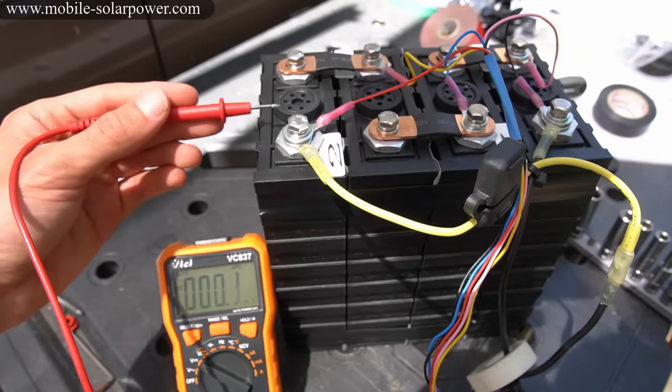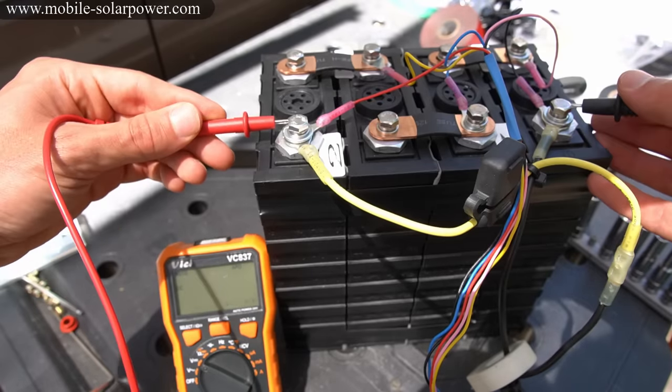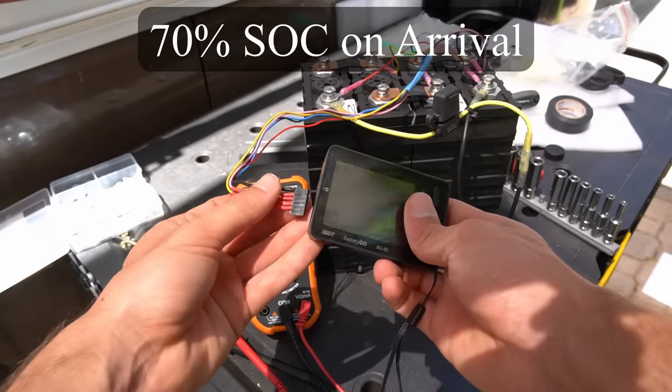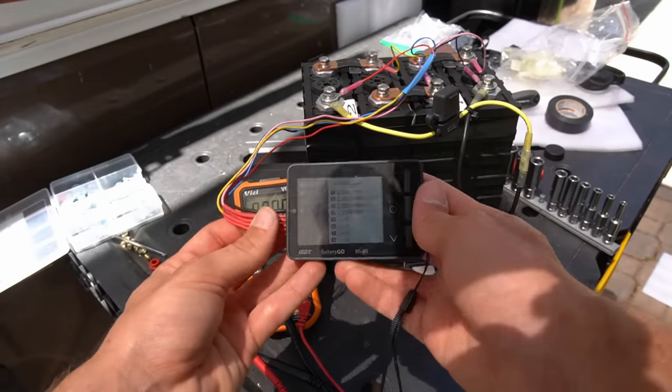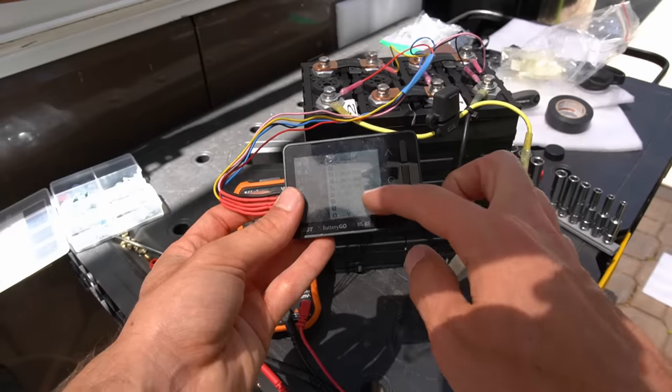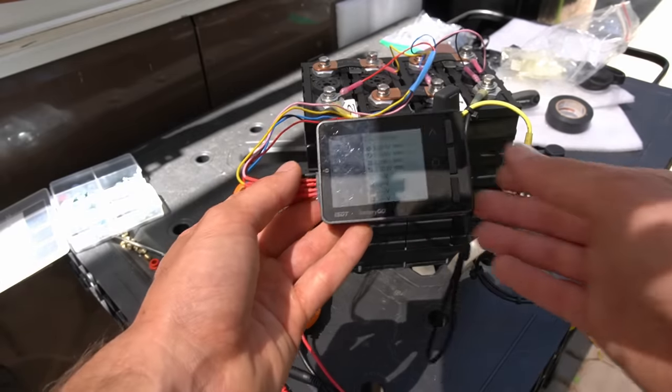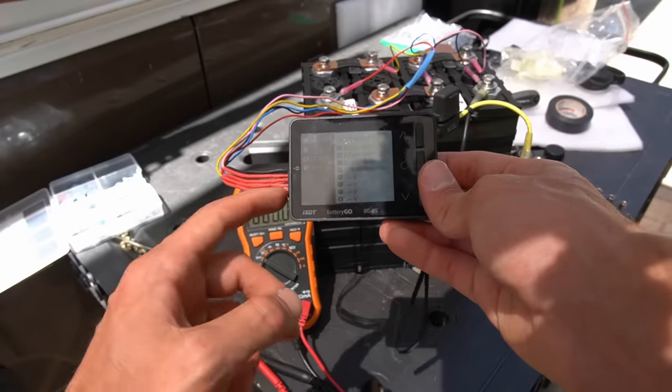Now that the bus bars and balance leads are connected, let's check the battery voltage. And we have 13.26. And we can also test the balance cable. So we're going to plug it into our balancer and all of the voltages are correct. And you can balance it right now if you want, but I'm not going to do that. I'm going to discharge it and see how these cells work.